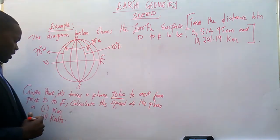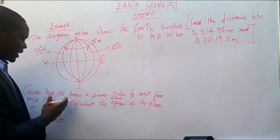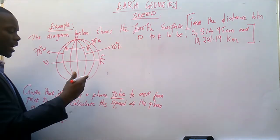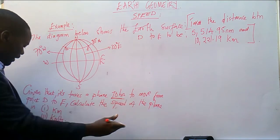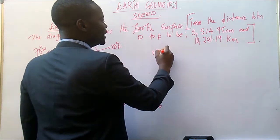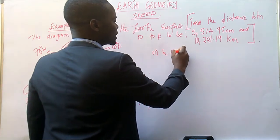So this is a time calculation. Now, it's saying that it takes a plane 10 hours to move from point D to point E. Calculate the speed of the plane in kilometers. So let's calculate the speed of the plane in kilometers.